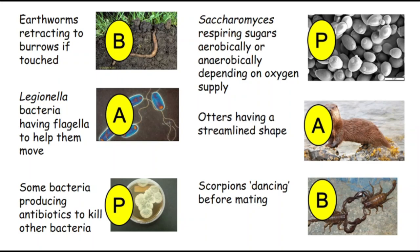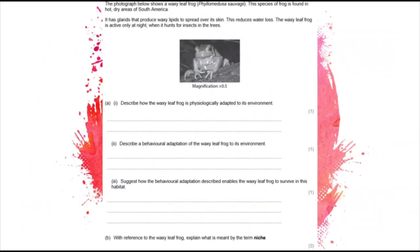Now let's attempt some exam questions, which are available on Moodle. The photograph shows a waxy leaf frog found in hot, dry areas of South America. It has glands that produce waxy lipids to spread over its skin, reducing water loss. The waxy leaf frog is only active at night when it hunts for insects in the trees.